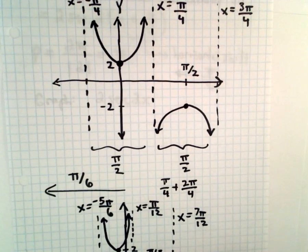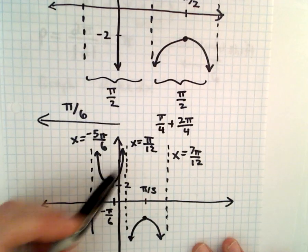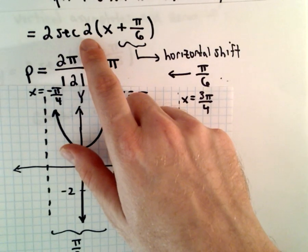The asymptotes, the graph, everything, to get the new graph. So, there's one period of the function that we set out to graph, 2 times secant of 2 times the quantity x plus pi over 6.